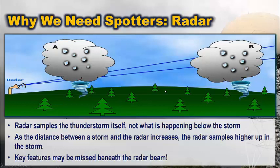What happens is the radar samples the thunderstorm itself, not what's happening below the storm. So as the distance between a storm and the radar increases, the radar samples higher up in the storm. This can result in us missing key features beneath the radar beam.